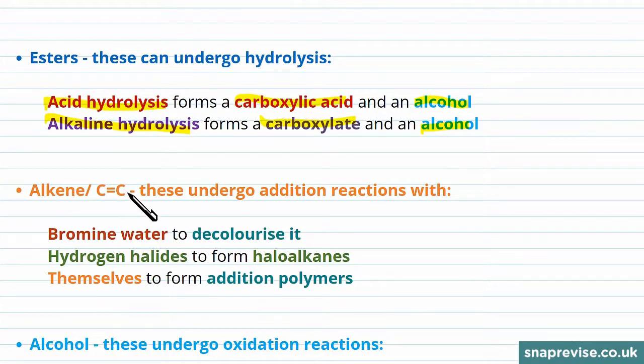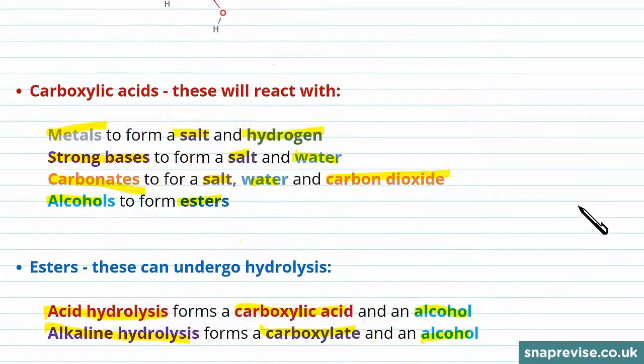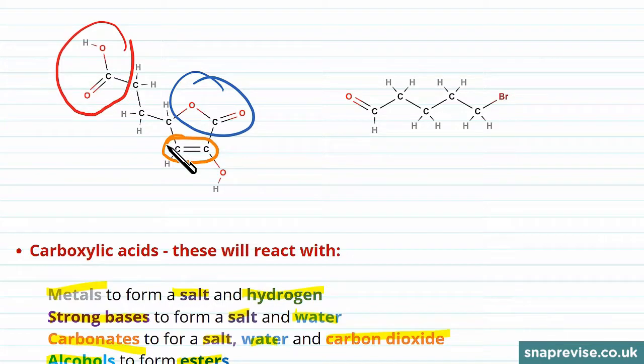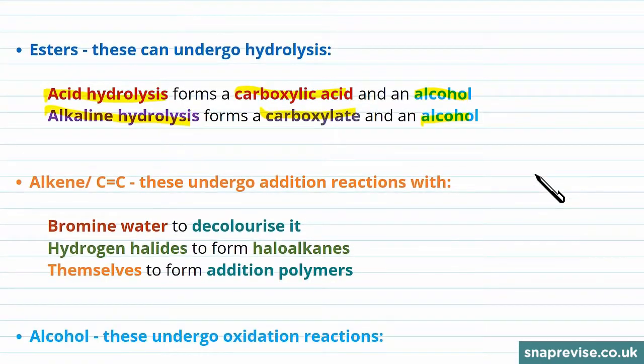Next we'll look at alkenes or carbon-carbon double bonds within the molecule. Above we can see these here as the double bond link between the two carbons. Now let's look at what reactions they undergo.